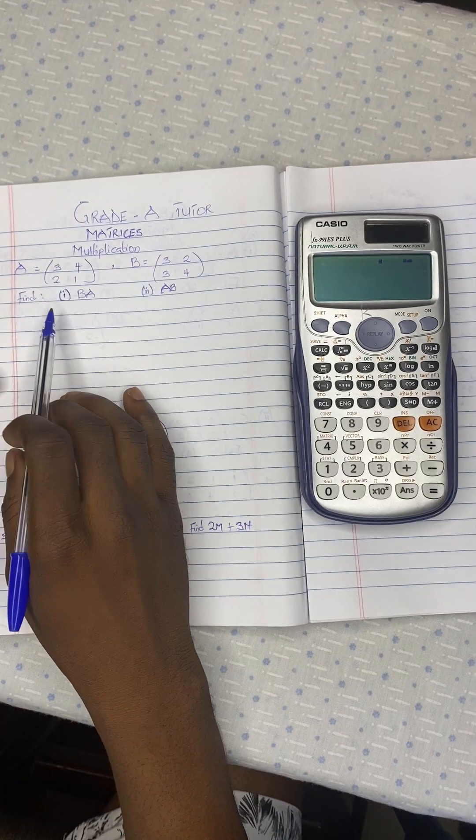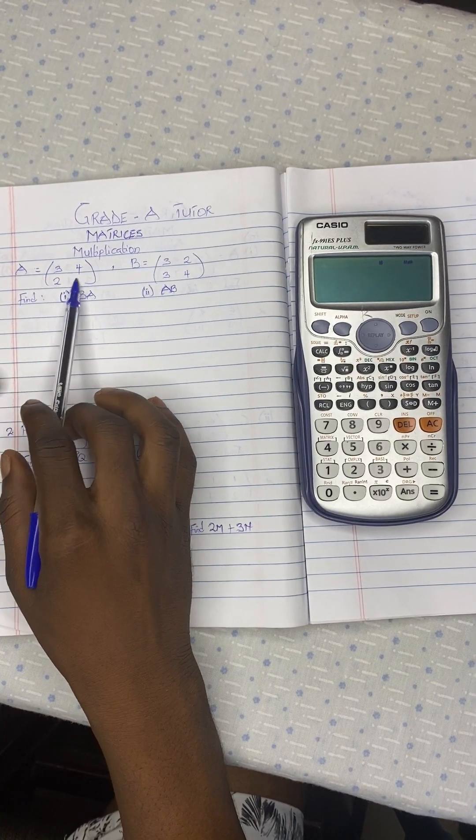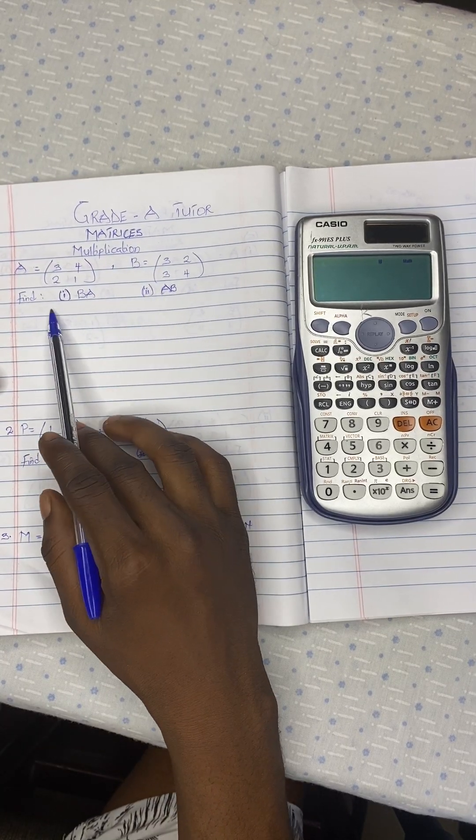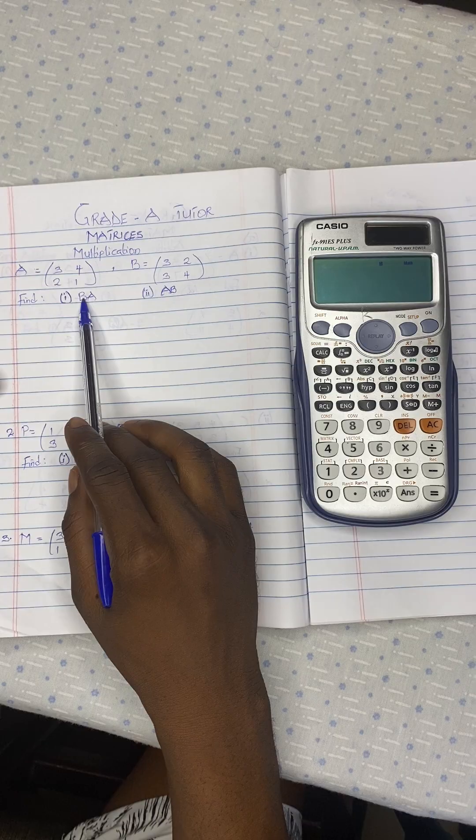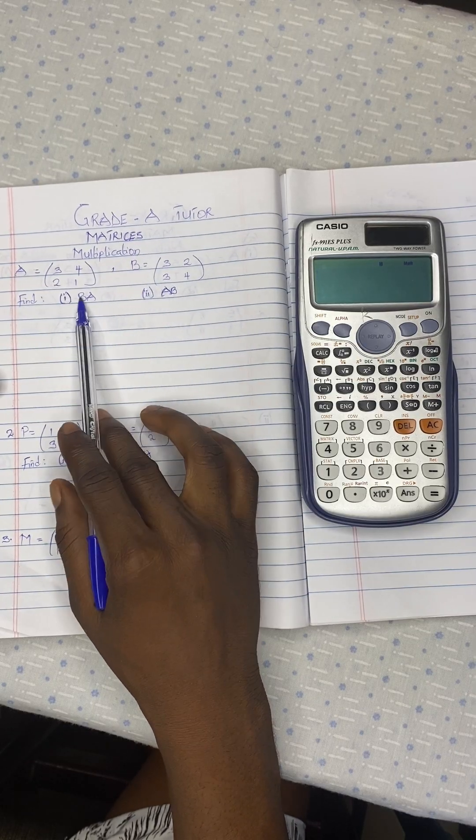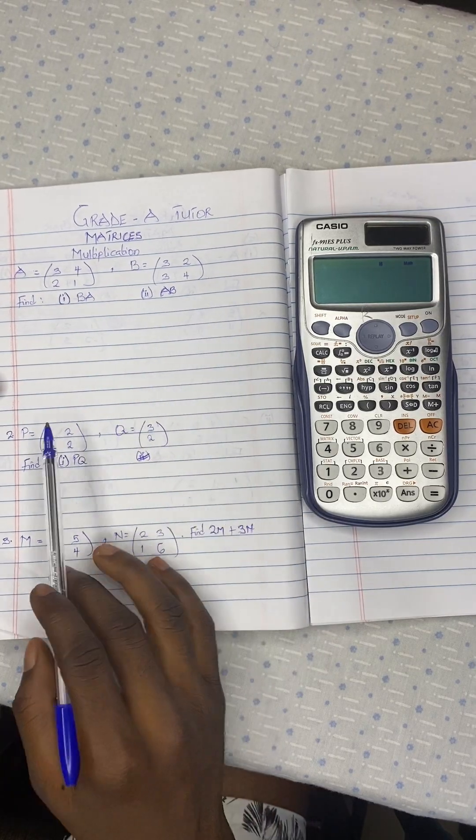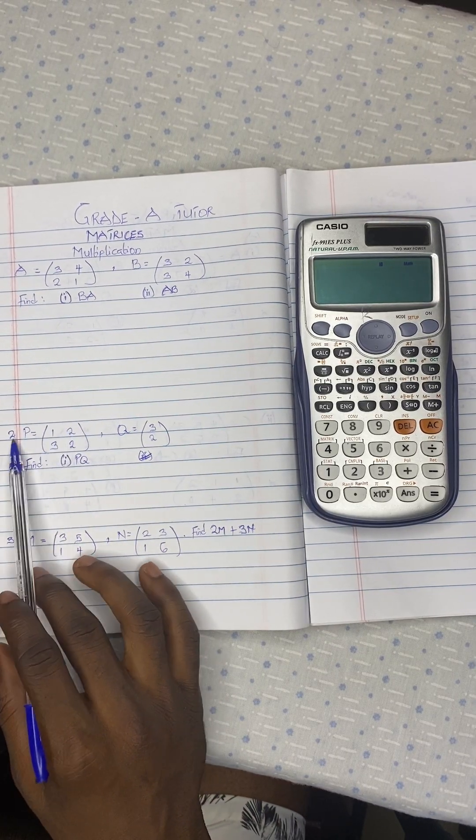So we have question 1 here, and that is A 2x2 dimension and B is also 2x2 dimension. So we have to calculate BA and AB. BA is different from AB, so I'll be doing that of the first one, then leave the second one for you to also try on your own.